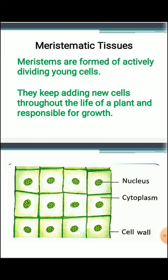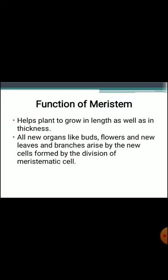Regarding the location of meristem — meristems are found in the growing points of plants. They form apical meristem in the root, shoot, and branches. The growth in thickness of stem and root is due to the activity of lateral meristem. The function of meristem is to help plants grow in length as well as in thickness. New organs like flowers, leaves, and branches arise from new cells formed by division of meristematic cells.